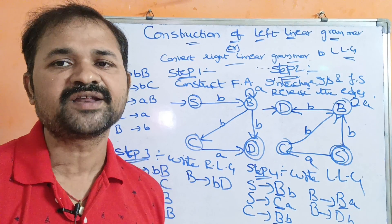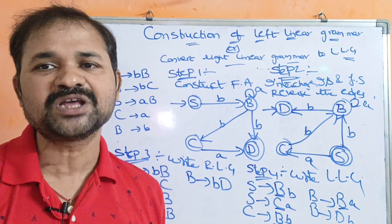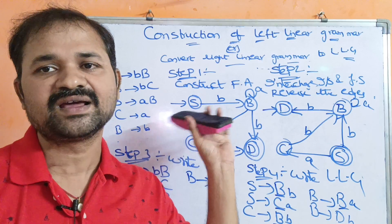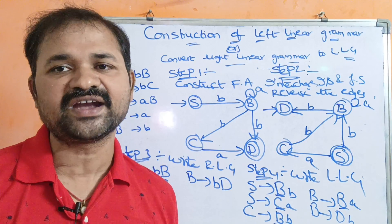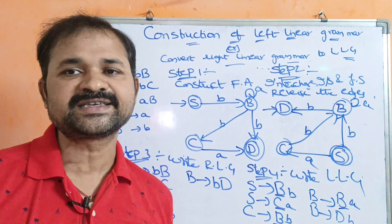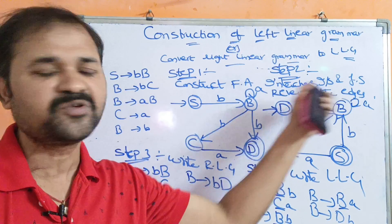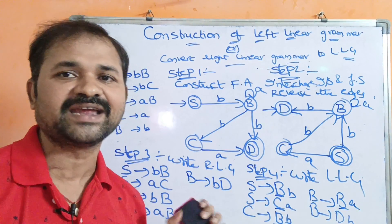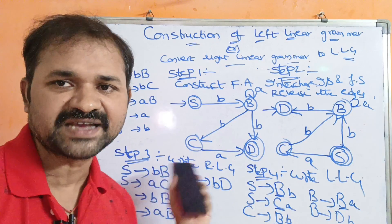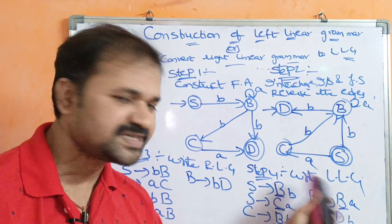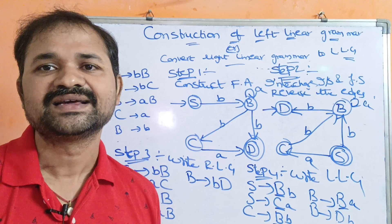In summary, to convert right linear grammar into left linear grammar, we follow four steps. Step 1: construct finite automata from the right linear grammar. Step 2: reverse the finite automata by exchanging the initial state and final state and reversing the edges. Step 3: write the right linear grammar from the reversed finite automata. Step 4: write the left linear grammar by reversing the right-hand side of each production.